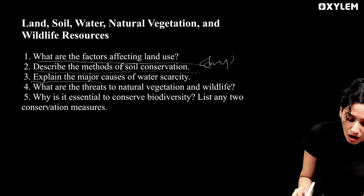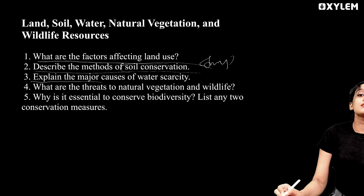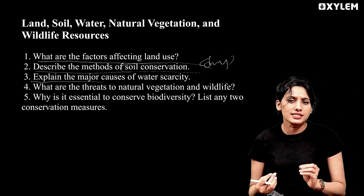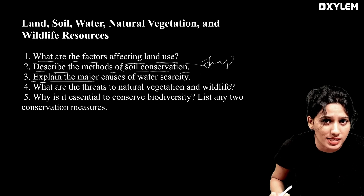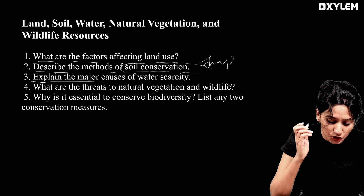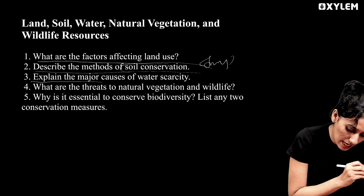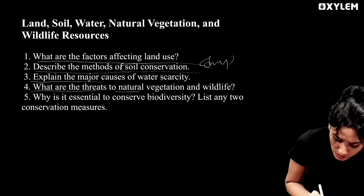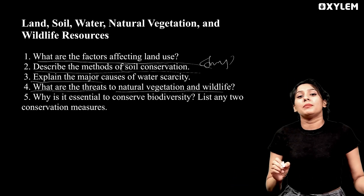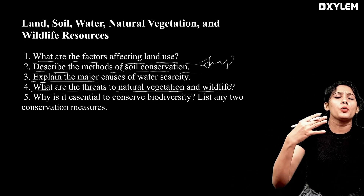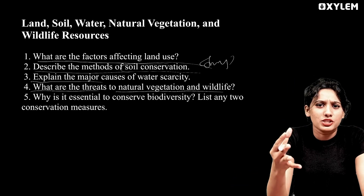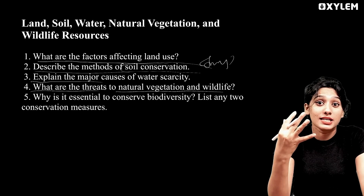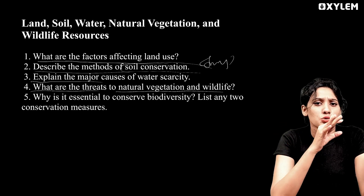And explain the major causes of water scarcity — what are the reasons? Major causes are important here; that's a short question in this chapter. Then, what are the threats to natural vegetation and wildlife? We need to learn about the issues facing natural vegetation and wildlife resources.